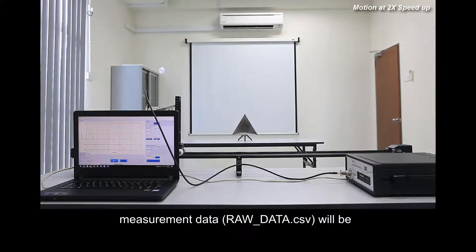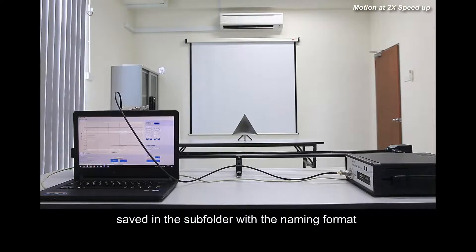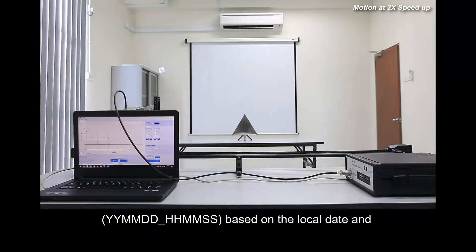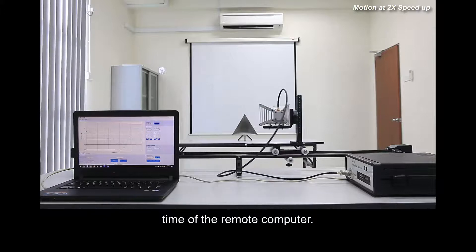Once the scanning process is completed, the measurement data, raw-data.csv, will be saved in the subfolder with the naming format: year, month, date underscore hour, minute, second, based on the local date and time of the remote computer.